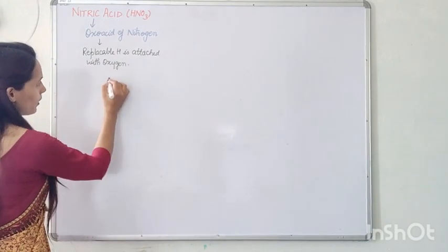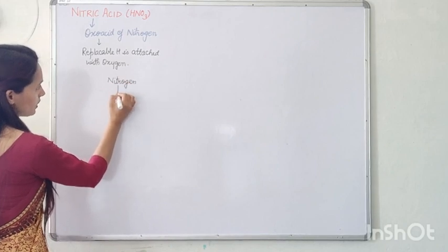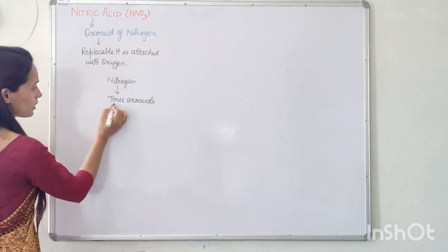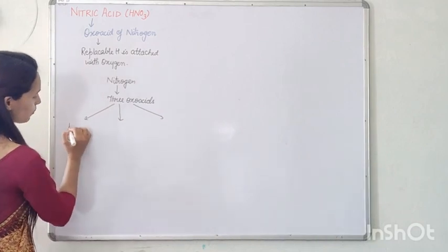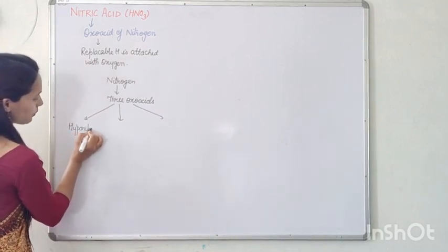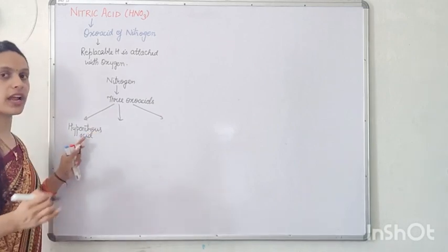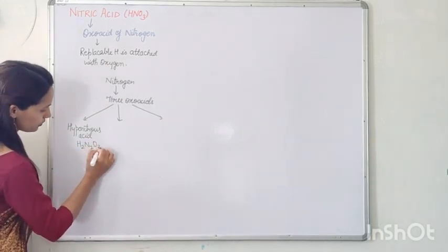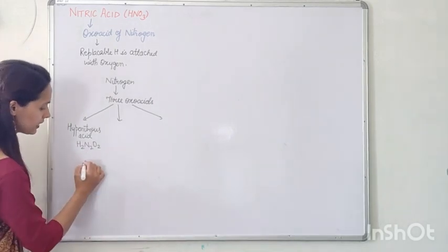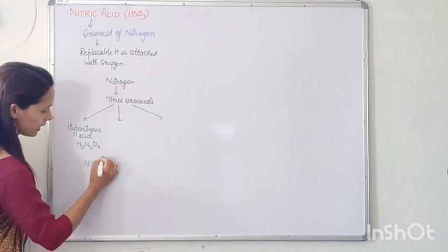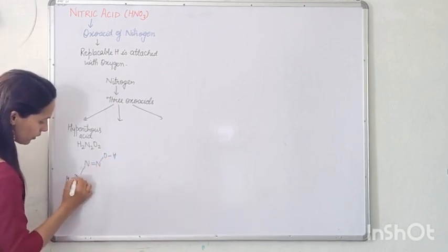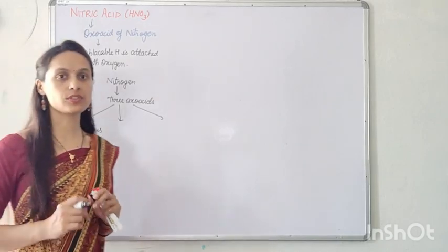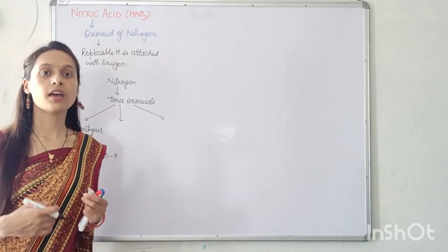Nitrogen forms three oxoacids. The first is hyponitrous acid, with formula H2N2O2. Its structure is: N double bond N, single bond OH, single bond OH. In this case, the replaceable hydrogens are attached with the oxygen — that's why it is known as an oxoacid.